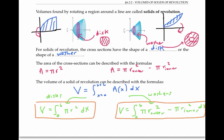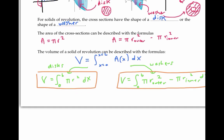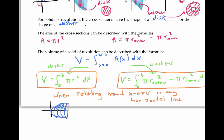These formulas work when the solid of revolution is formed by rotating a region around the x-axis or any horizontal line. When we rotate around a horizontal line, our cross-sectional disks or washers are perpendicular to the x-axis and are thin in the x direction, so it makes sense to integrate dx.